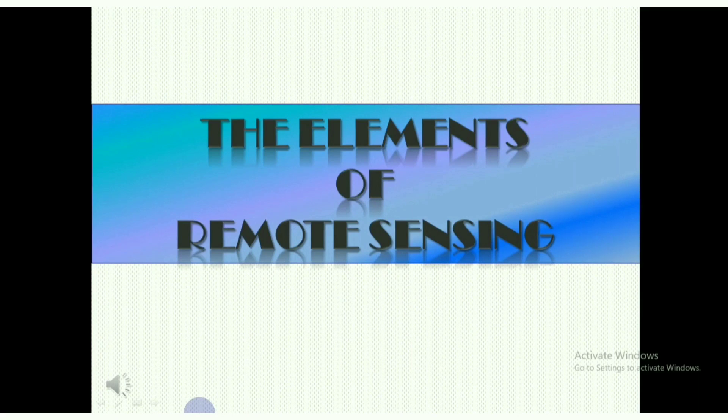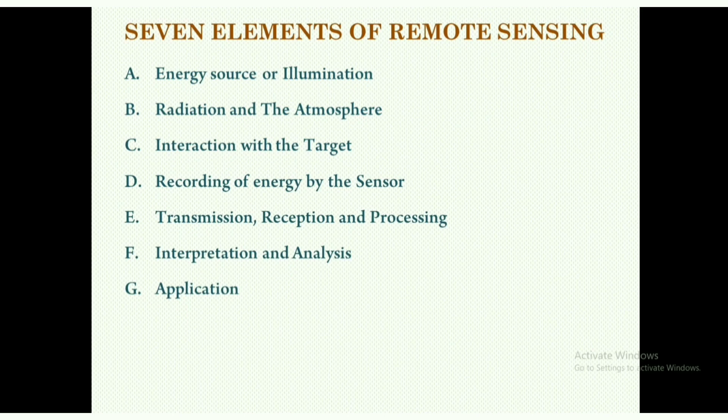The elements of remote sensing. In my previous video I showed you only the working process of remote sensing. Now I will show in detail the elements of remote sensing. There are seven elements: number A, energy source or illumination; number B, radiation and the atmosphere; number C, interaction with the target; number D, recording of energy by the sensor; number E, transmission, reception and processing; number F, interpretation and analysis; and number G, application.